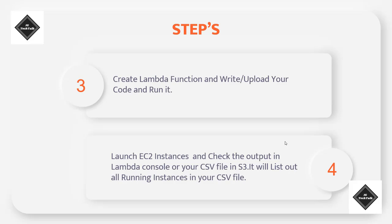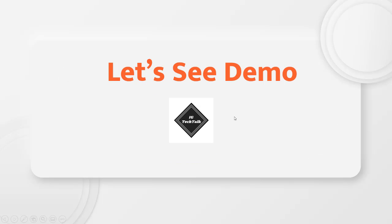Then at the last, we will launch some EC2 instances and check the output in the Lambda console, or you can also check from your S3 bucket. You can download your CSV file which was blank earlier, and after running it, there will be the list of your running EC2 instances — it will print the instance IDs which are already running in your EC2 console. So let's see the demo.